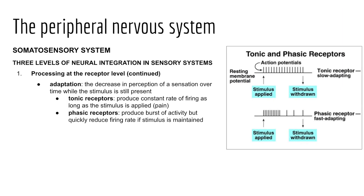Another way to view adapting receptors is through tonic and phasic receptors. Tonic receptors produce a constant rate of firing as long as a stimulus is applied — like pain receptors that continuously signal while the stimulus is present. Phasic receptors produce a burst of activity but quickly reduce firing rate if the stimulus is maintained — like scent receptors. For example, walking into a home with a distinctive smell: you detect it initially, but gradually adapt as action potentials decrease.